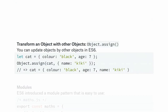In addition to assigning object properties with dot notation, in ES6 you can use Object.assign() to assign and update an object with properties from another object. For example, 'Object.assign(cat, {name: "Kiki"})' adds the name property to cat. This is useful for merging two or more objects. If the second object has a key matching the first, it overwrites the first. You can pass two or more source objects.